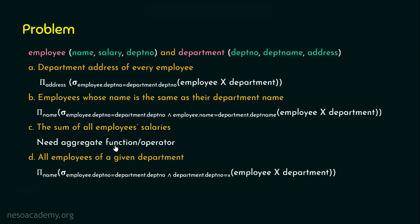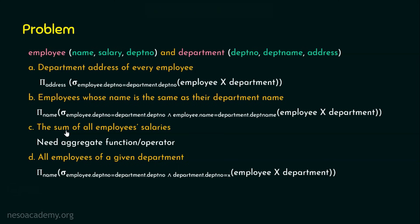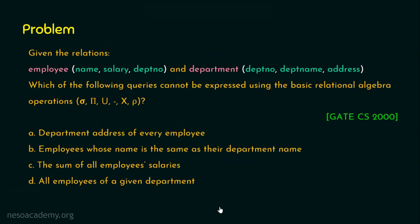Option C cannot be done because to perform the sum of all employee salaries we need an aggregate function or an exclusive operator for summation, which is not available in the basic relational algebra operations. Extended or aggregate operators — including sum, minimum, maximum, average, and count — are needed. We will focus on those when we cover the SQL topic in detail. So the right answer is option C. I hope it's clear. See you in the next problem, thank you for watching.